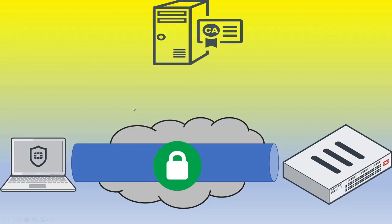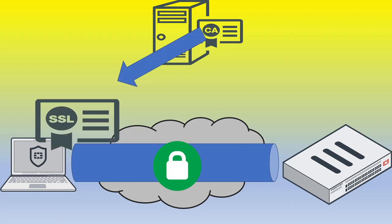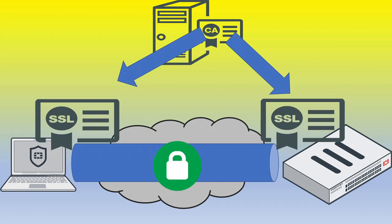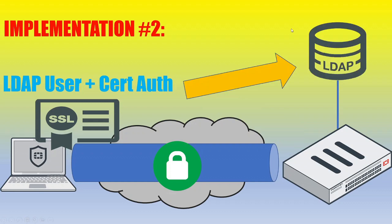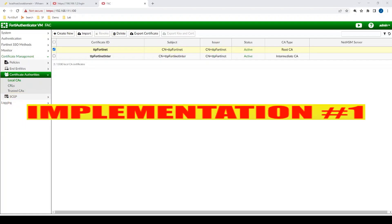To generate certificates, I'm going to be using FortiAuthenticator as the certificate authority. You could use FortiAuthenticator, XCA, Microsoft CA, Microsoft IIS, or OpenSSL, but in my case I'll use FortiAuthenticator. We're going to sign a certificate for every single user and every single user machine, and then there will be just one server certificate that gets installed on the FortiGate firewall. Let's start by creating the certificates we're going to need.